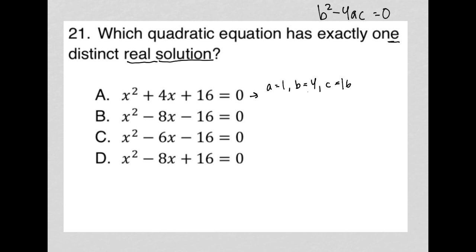So b² would be 16 minus 4ac would be 4 times 1 times 16, and we want that to equal zero, which is not going to be the case. If we have 16 here, I need this to also equal 16, so we have 16 minus 16 equals zero. If you did the math there fully, you will see that that's not equal to zero. So choice A is gone.